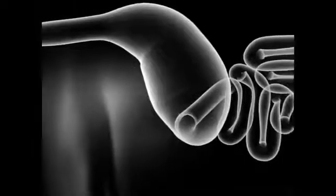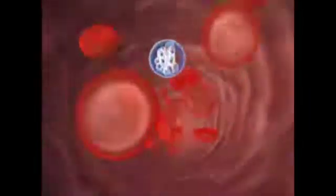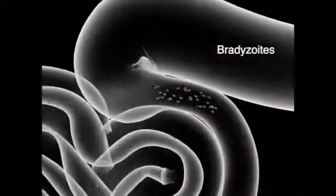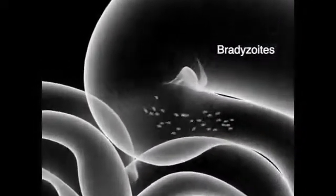As the tissues of the mouse are digested, so will be the cyst wall, liberating hundreds of bradyzoite forms that reside inside each tissue cyst. Once free in the digestive tube of the cat, the bradyzoites will penetrate epithelial cells of the intestine, especially in the terminal segment of the small intestine, the ileum.